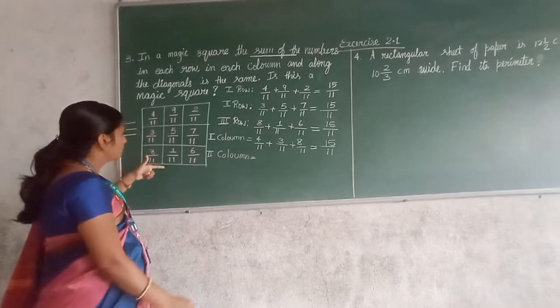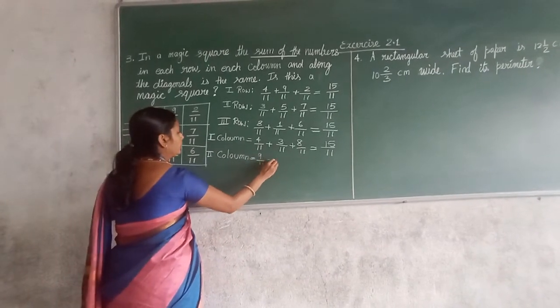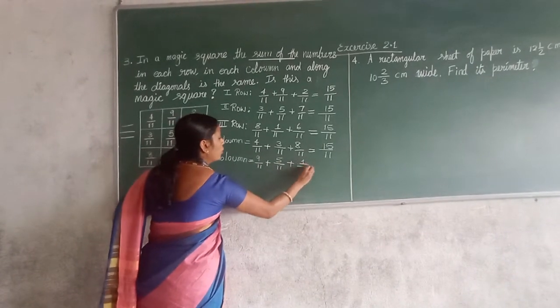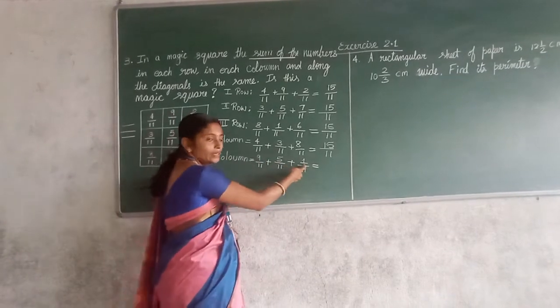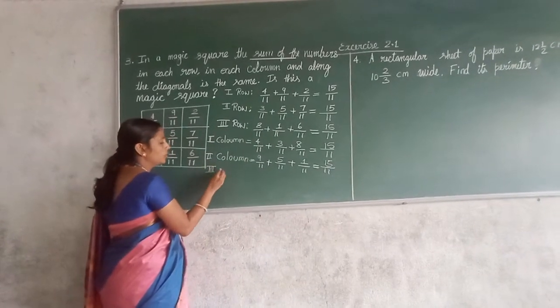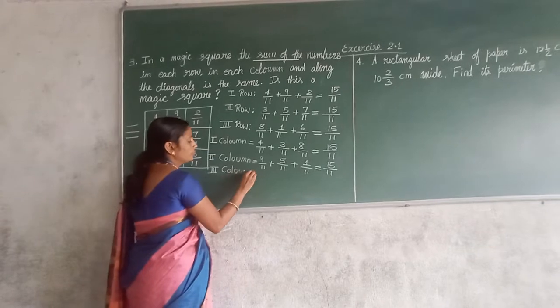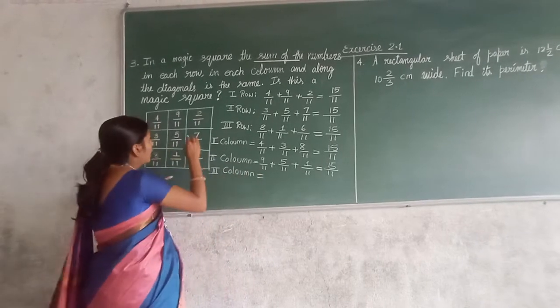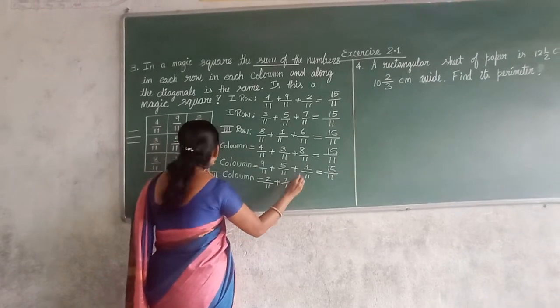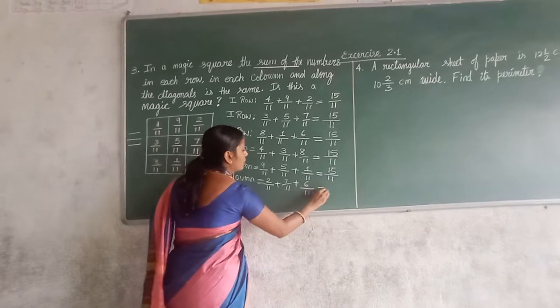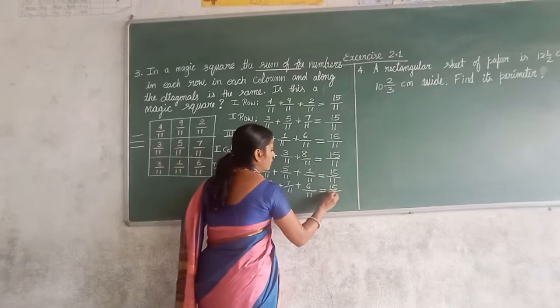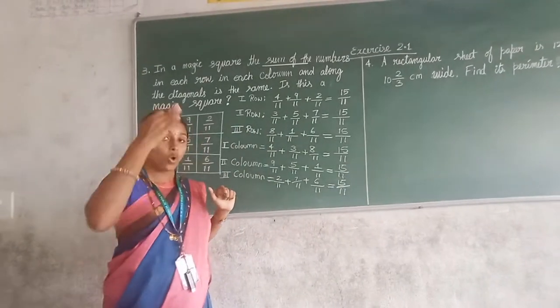Now let us go for the second column. 9 upon 11 plus 5 upon 11 plus 1 upon 11. Now let us go for the third column. Third column sum. Now 2 upon 11 plus 7 upon 11 plus 6 upon 11. So 2 plus 7, 9. 9 plus 6, 15. Now row wise over. Column wise over.